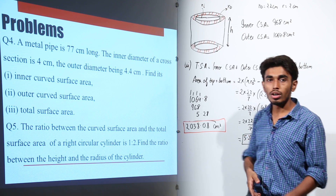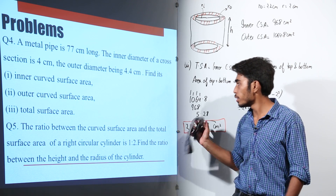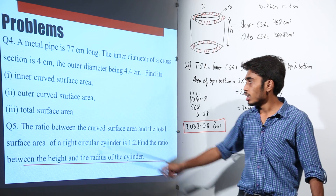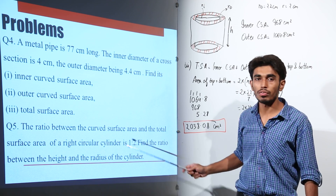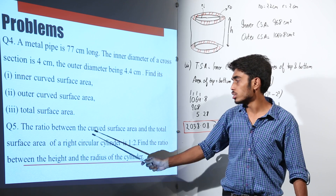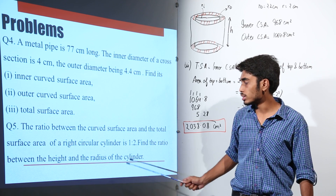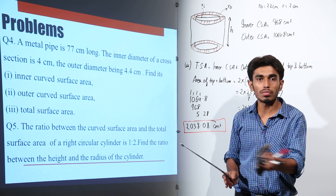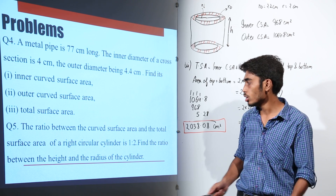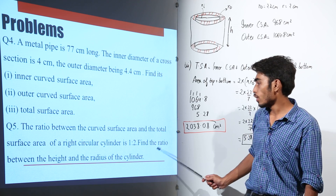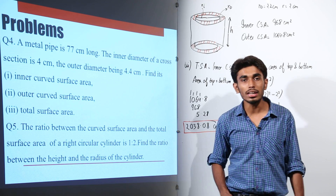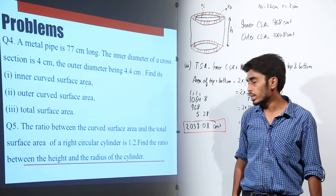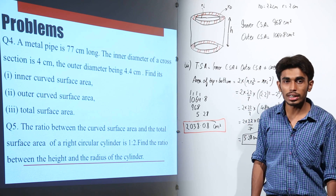Now let us move on to the next question. The question says: the ratio between the curved surface area and the total surface area of a right circular cylinder is 1 to 2. Find the ratio between the height and the radius of the cylinder.